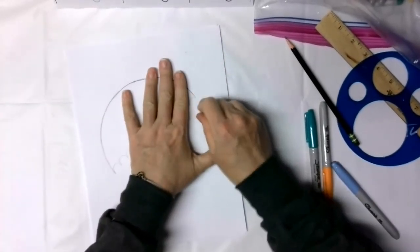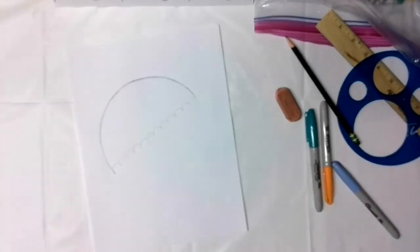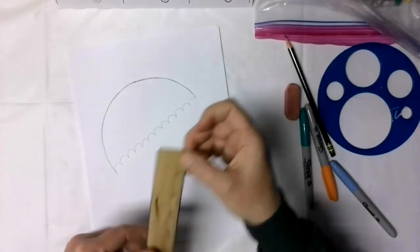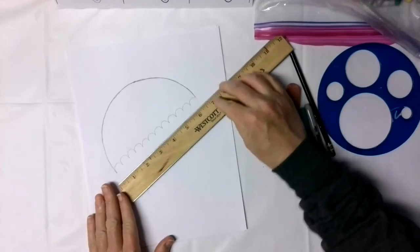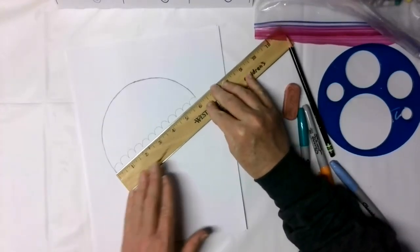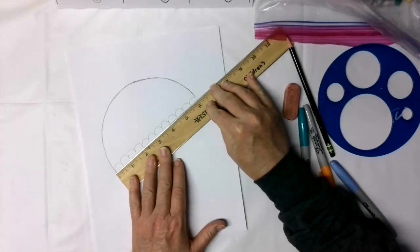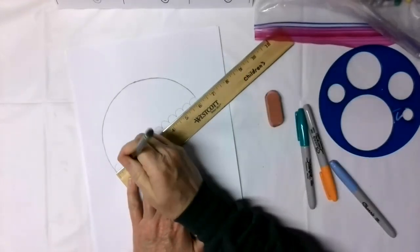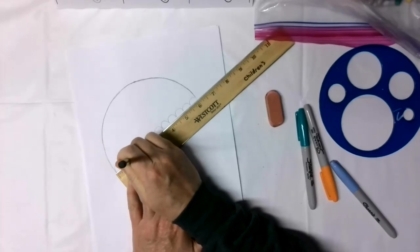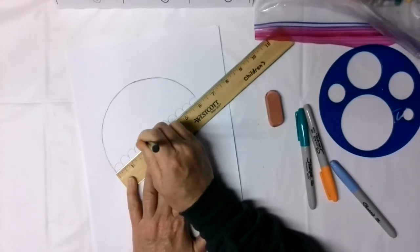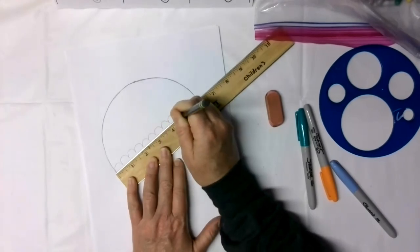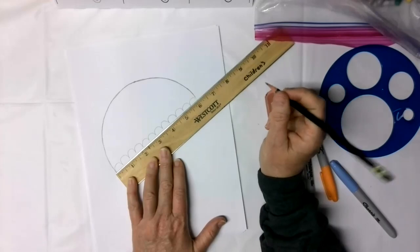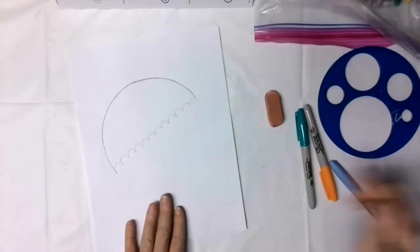So mine don't all have the exact same curve, but they do closely resemble the same size. And as you can see, one side of my umbrella was just a little bit long. So this is where the eraser comes in handy.